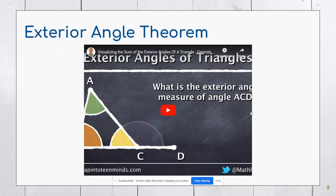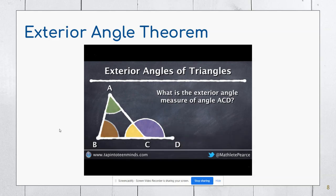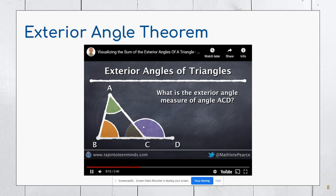Next we have the exterior angle theorem. And again, I have a little video to show you how this is going to work. I have the same three interior angles, A, B, and C. So what's going to happen is this angle out here is the same as angle A and angle B added together.